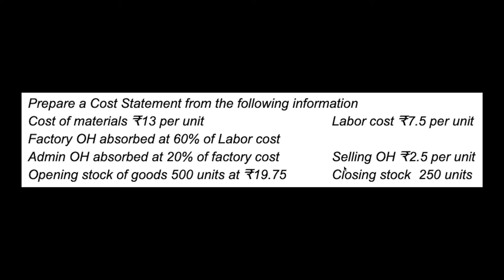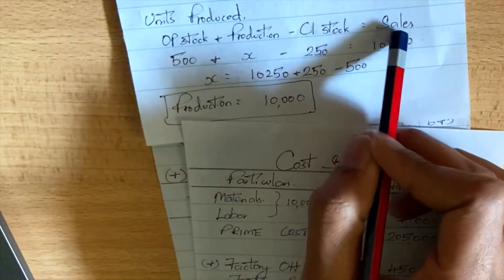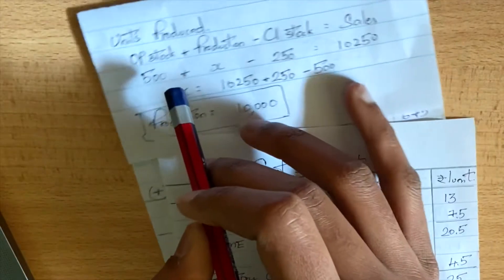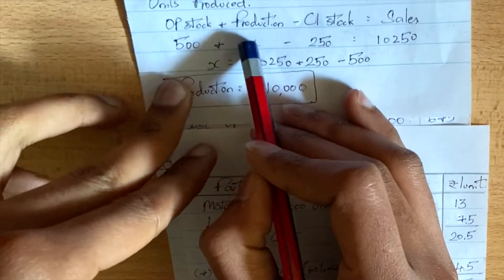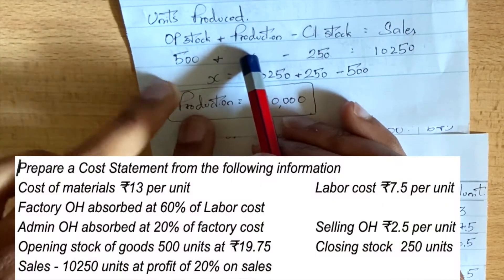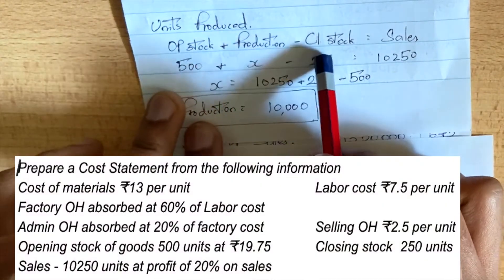This problem — obviously the production unit is the first step. The sales formula is: opening stock plus production minus closing stock.